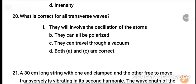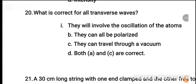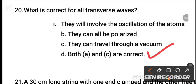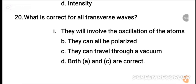MCQ number 20: What is correct for all transverse waves? They can all be polarised. Options include: they involve oscillation of atoms, they can all be polarised, they can travel through a vacuum, both A and C. The correct answer is both A and C. This completes the Part A discussion of 20 MCQs. Please share. Allah Hafiz.